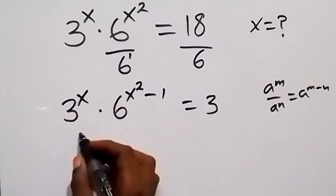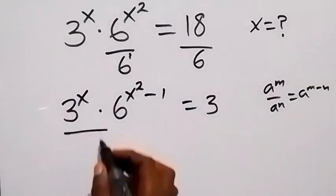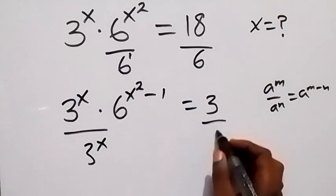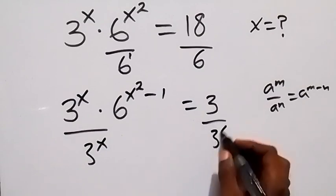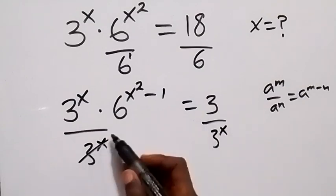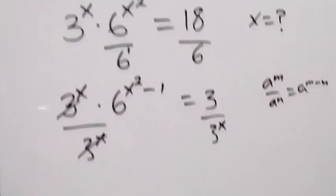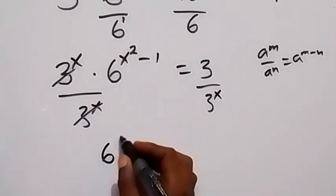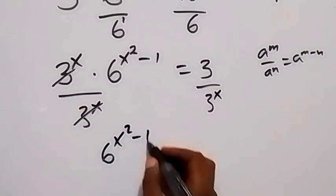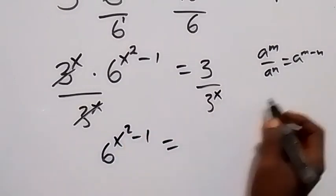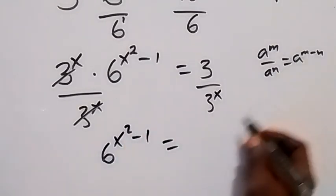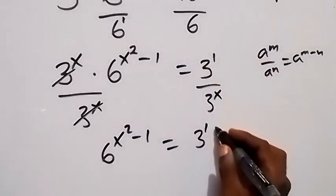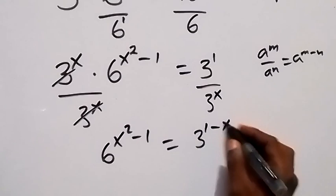In the next step, let's divide both sides by 3 raised to power x. The 3 raised to power x terms cancel, and we have 6 raised to power x squared minus 1 equals 3 raised to power 1 minus x, applying the same law of indices.